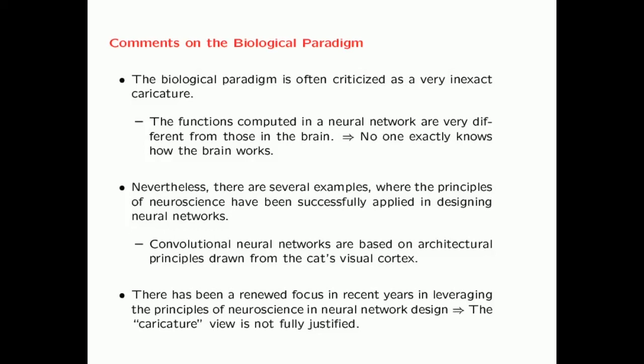This biological paradigm is often criticized as a very inexact caricature, because the functions computed in a neural network are gross oversimplifications of what really happens in the brain. In fact, no one exactly knows how the brain truly works. In spite of this, there are several examples where the principles of neuroscience have been successfully applied in designing neural networks. A classical example is convolutional neural networks, which are used for classifying image data and are based on architectural principles drawn from the cat's visual cortex. Convolutional neural networks can now achieve accuracy for image recognition which exceeds that of a human.